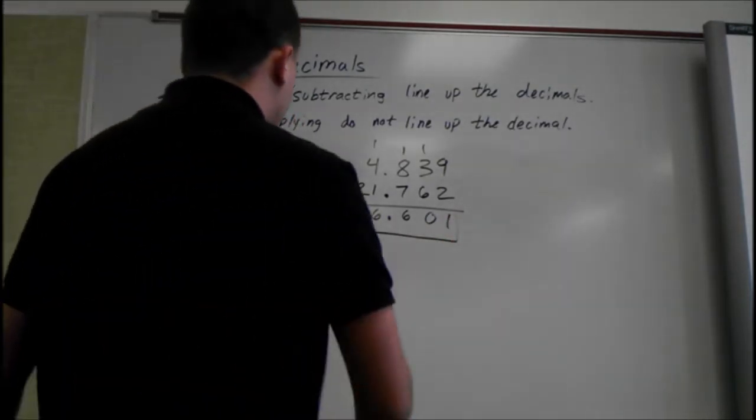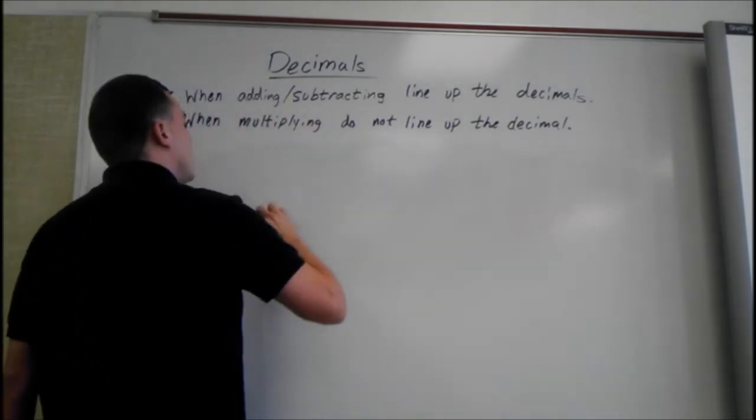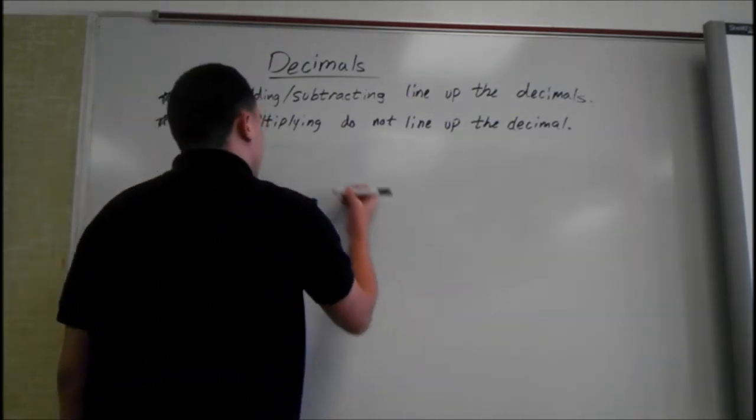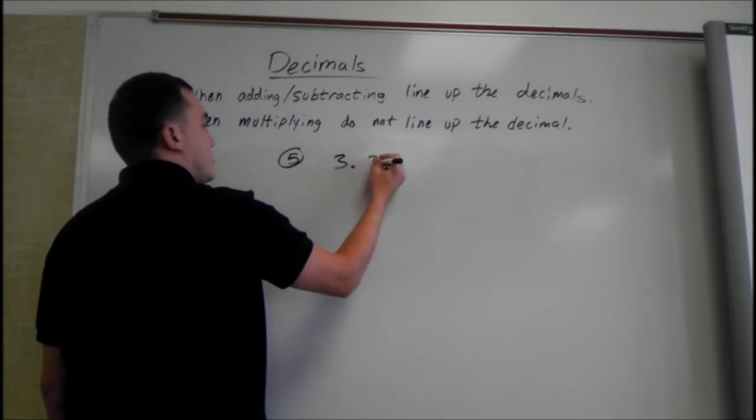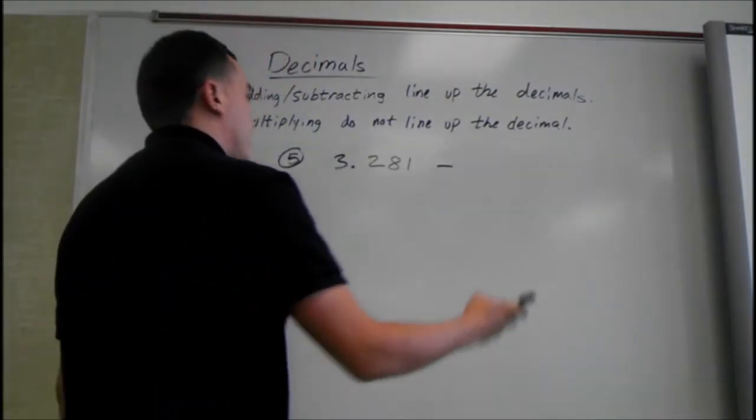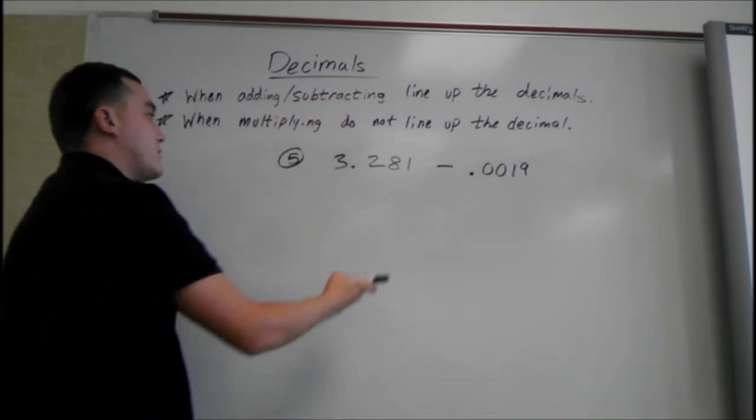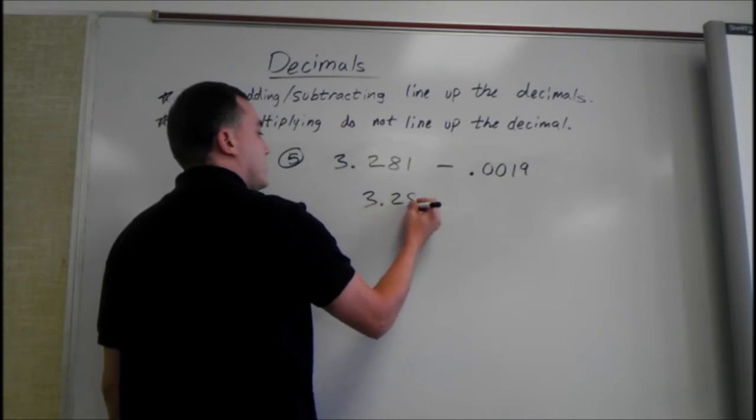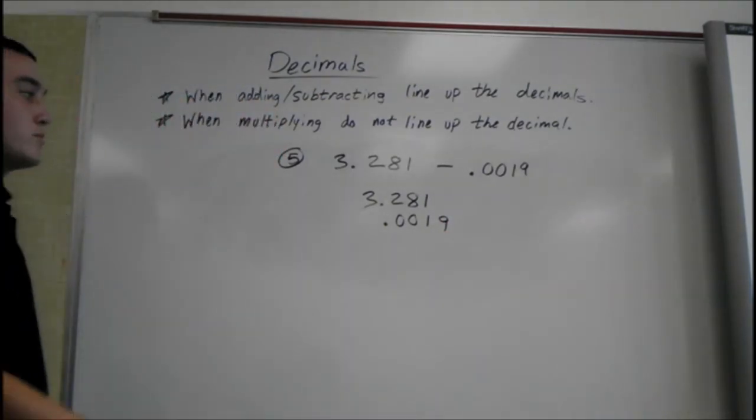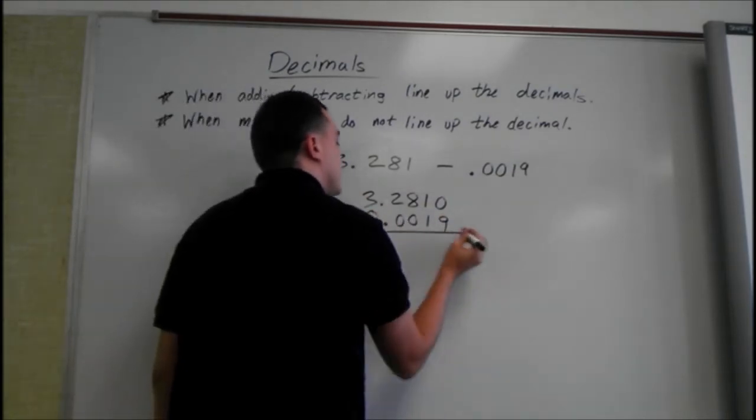Now I'll do some subtracting, which is just like regular subtraction, just doing them with decimals now. Start out with 3.281 minus 0.0019. Line them up first. If there's nothing above it, you can put a 0 as a placeholder. Same thing here. We're subtracting.